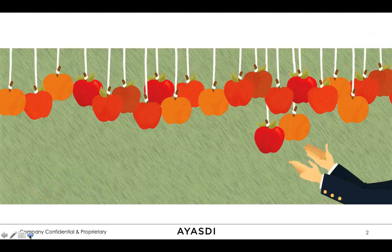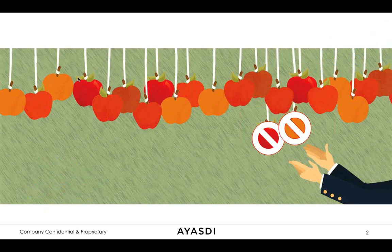There are lean processes. There are new analytic methods and best practices there. Nonetheless, this denials management problem persists. You already know who your top payers are that are driving denials. You already know whether pre-certification denials or medical necessity denials are a bigger problem. You already know which are the most problematic facilities in your network. The best practices and all of the work to date has gotten you through the low-hanging fruit. The reason this problem has been so persistent is that there's not much low-hanging fruit left. What's left is complex and it's not obvious.